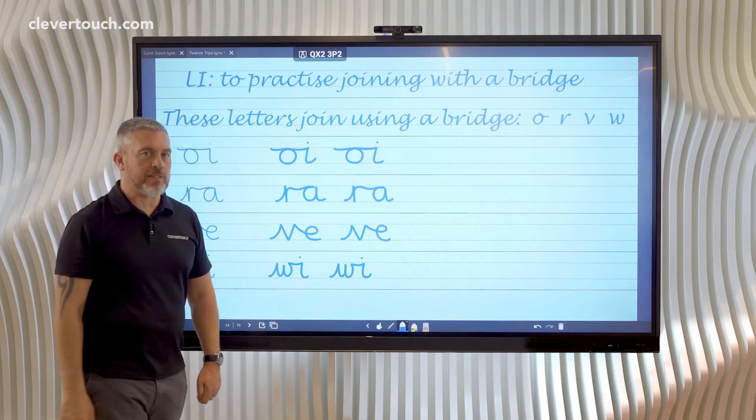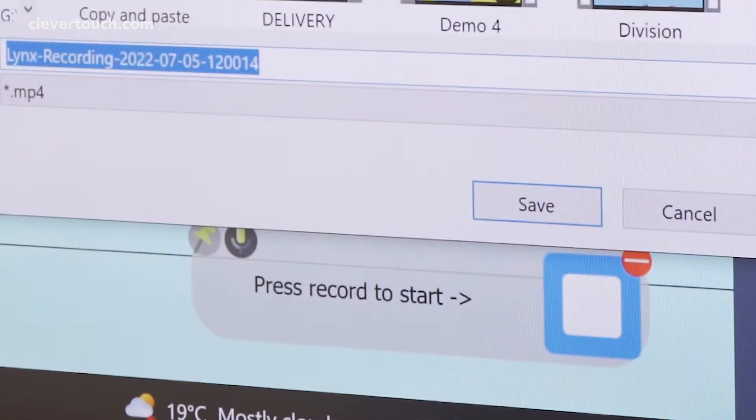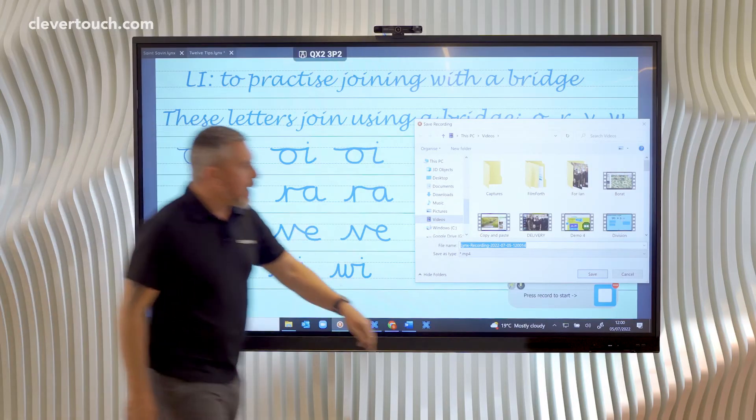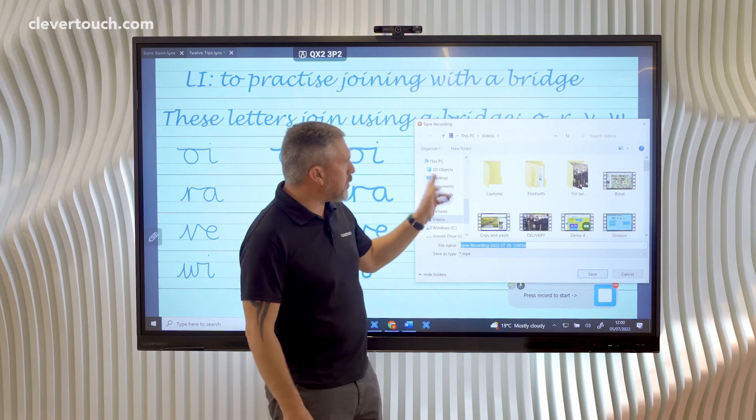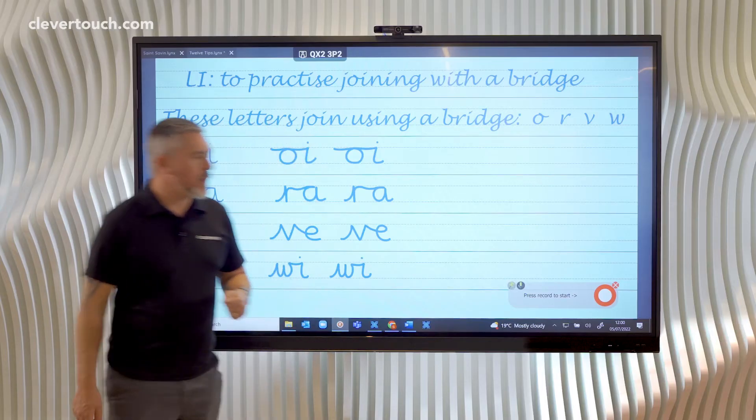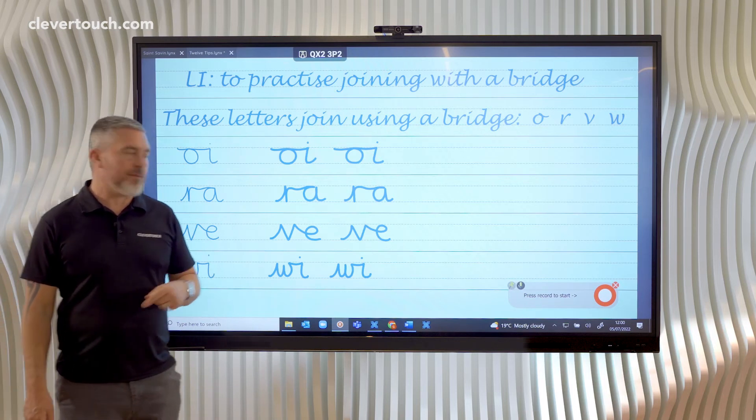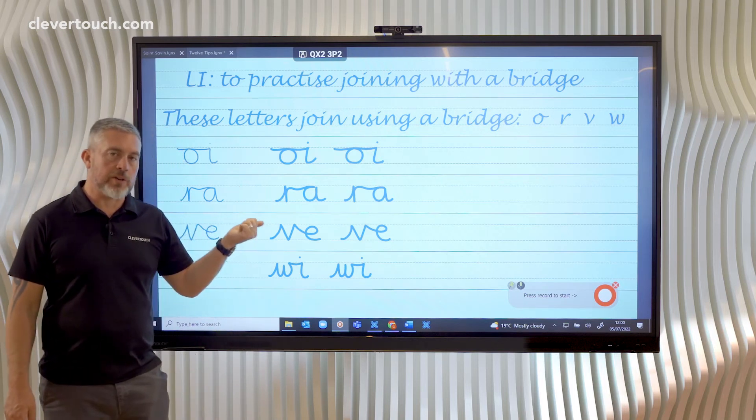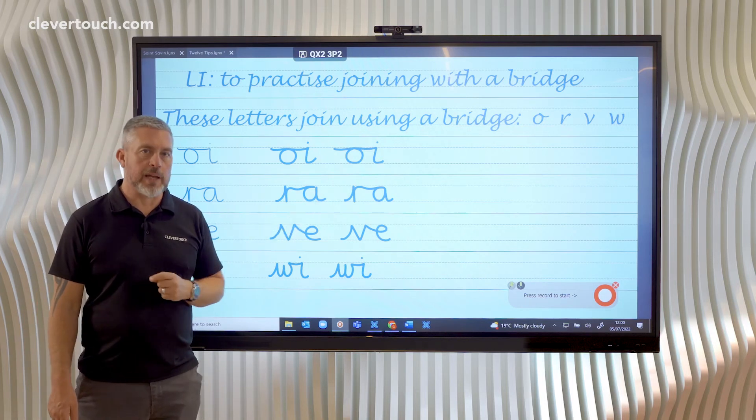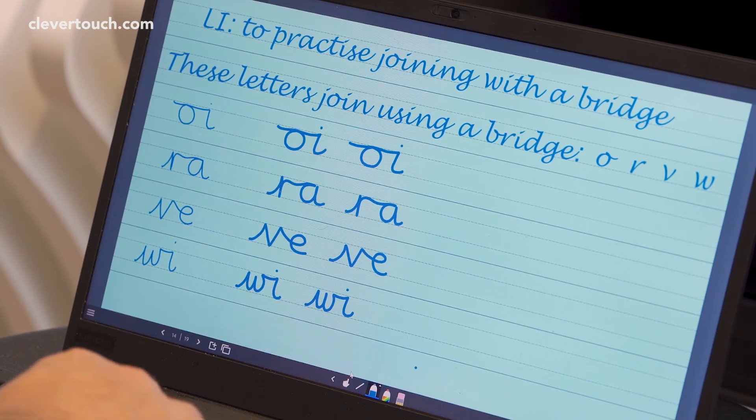Now I'm turning off the video and it's inviting me to save the video somewhere. I can rename it, but I'm just going to save it here in my video section. Now if I want to get that video onto my slide, all I've got to do is copy and paste it onto the page.